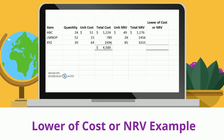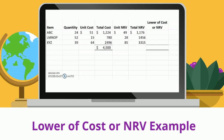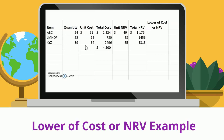You can analyze multiple items or categories of inventory the same way. Assume your inventory consists of the following. We want to identify for each item which is lower — cost or net realizable value — then determine the total that may need to be written down. We have three items: ABC, LMNOP, and XYZ. We have the quantities, the unit cost, and the total cost, which is quantity times unit cost. Then we have a unit net realizable value and a total net realizable value, which is the unit net realizable value times the quantity.